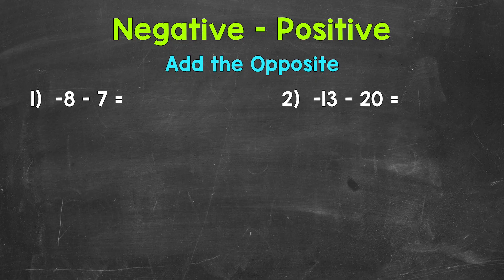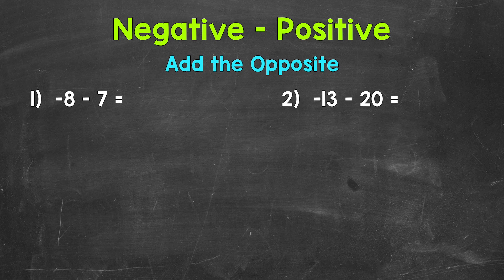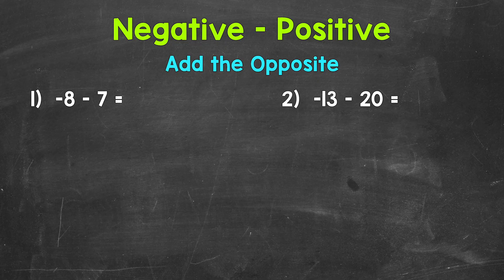Let's jump into number 1, where we have negative 8 minus 7. Now when we subtract integers, we can actually add the opposite. The opposite of subtraction is addition, and then we take the opposite of the number we are subtracting. So this gives us an equivalent problem, and we are able to use this strategy.